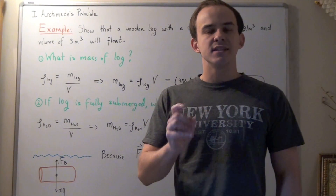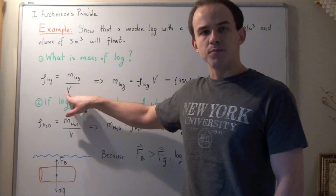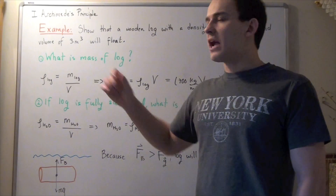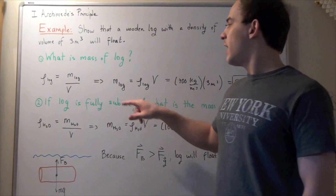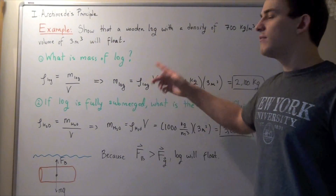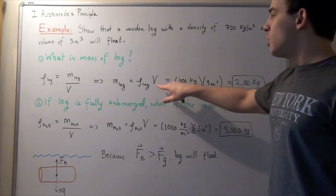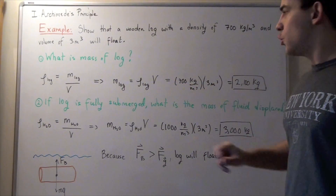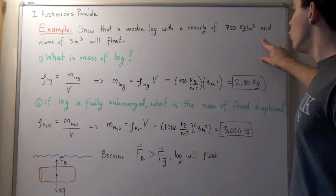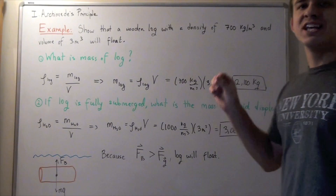Let's begin by finding the mass of our log. We use the density formula: density of log equals mass of log divided by volume. Rearranging, mass of log equals density of log multiplied by volume. Volume is 3 meters cubed and density is 700 kilograms per meter cubed. The meters cubed cancel, and we get 700 times 3, which is 2100 kilograms.